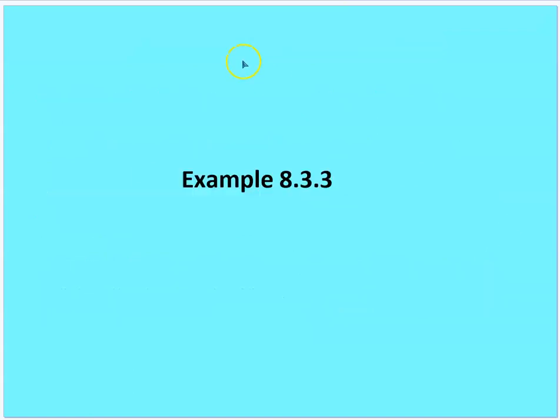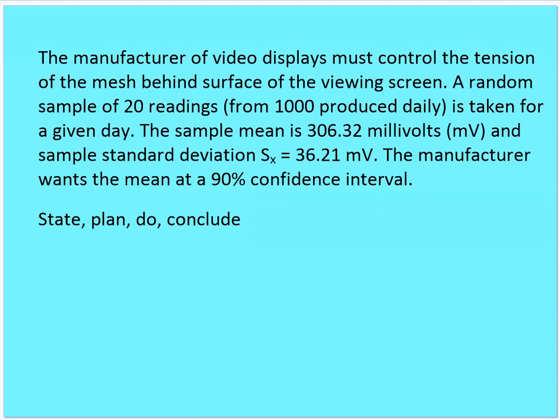Conditions for inference about a population mean: Random — comes from a random sample. Normal — population has a normal distribution or sample size is large (n ≥ 30). Independent — results of observations don't influence each other, so n must be less than or equal to one-tenth N. For example, the manufacturer of a video display must control the tension of the mesh behind the viewing screen. A random sample of 20 readings from 1,000 produced daily is taken. The sample mean is 306.32 millivolts and the sample standard deviation is 36.21 millivolts. The manufacturer wants the mean at a 90% confidence interval — state, plan, do, conclude. We'll pause here and show how to get this confidence interval on a calculator.